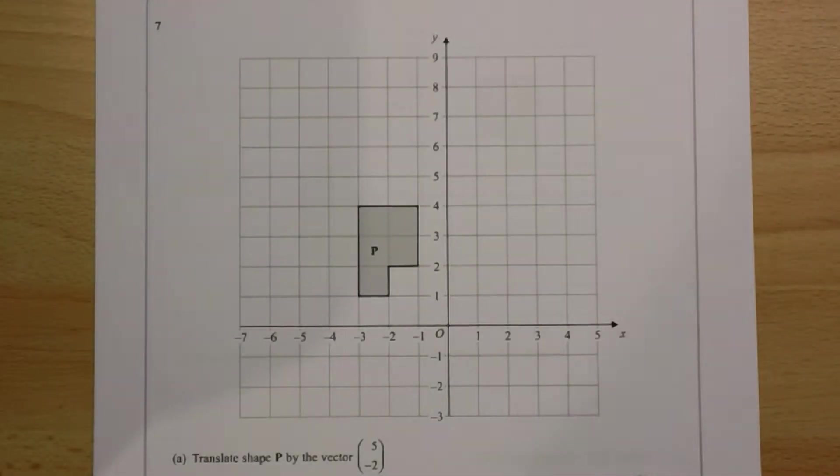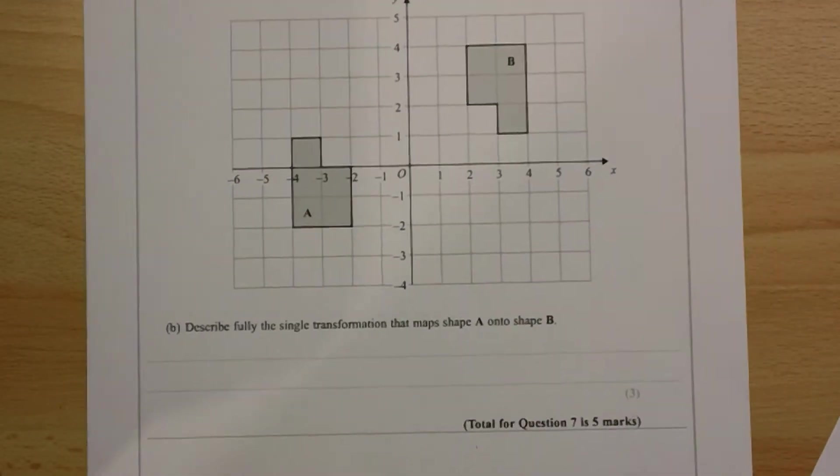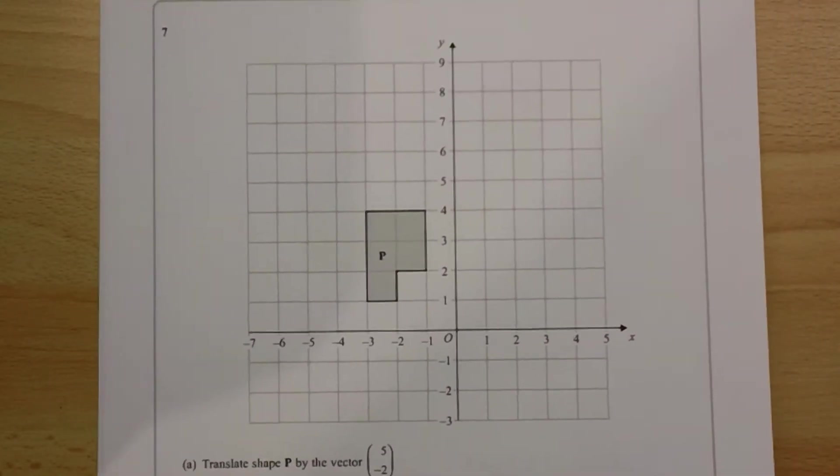Question number seven is a transformations question. Part A is translation, and part B is describing a transformation, which is a rotation. We'll come on to that in a minute.